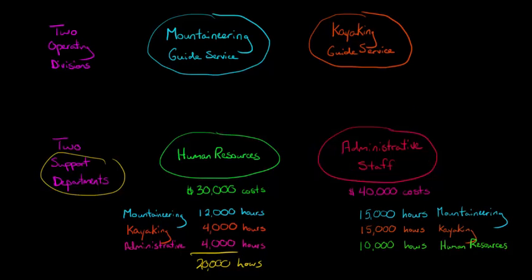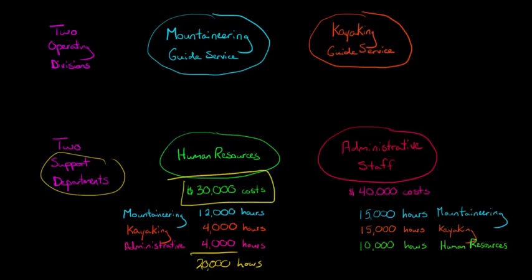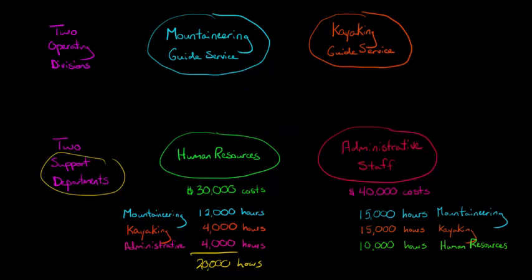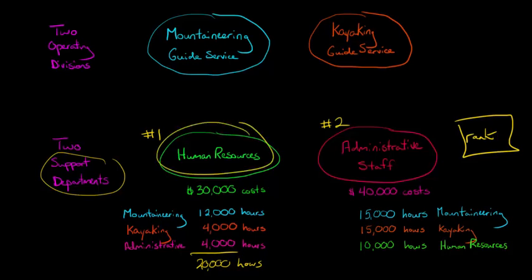So when we go to allocate, can we allocate some of the $30,000 in costs associated with HR — not just to mountaineering and kayaking, but also to administrative staff? The answer is yes, with the step-down method. But here's one important caveat: with the step-down method, we have to rank the support departments. Let's say we rank human resources number one and administrative staff number two. I'll explain the ranking concept in a moment, but let's start by allocating the costs for the HR department first.